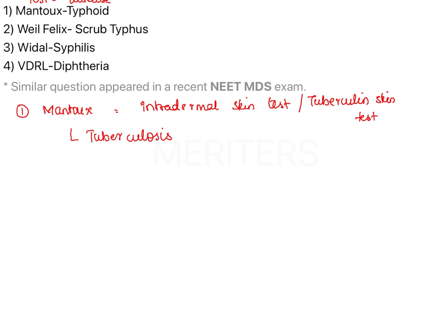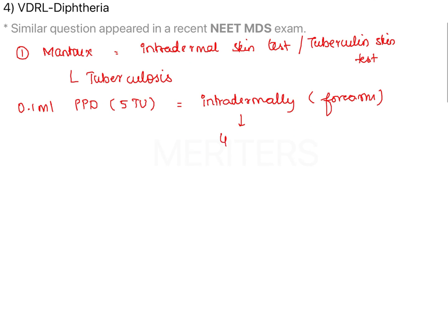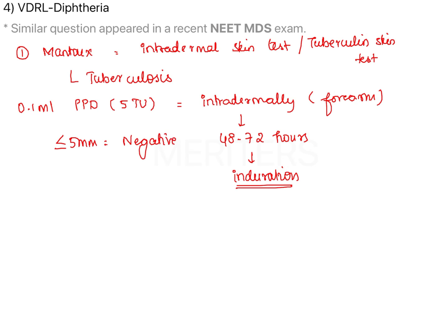In the Mantoux test, we inject 0.1 ml of purified protein derivative consisting of five tuberculin units intradermally into the flexor aspect of the patient's forearm. We then assess the site after 48 to 72 hours. We observe for induration: ≤5 mm is negative, 6–9 mm is equivocal, and ≥10 mm is considered positive for tuberculosis.